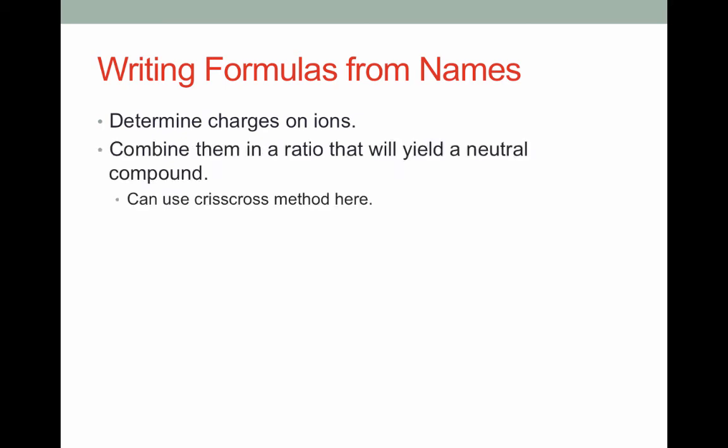Finally, it's important that you can also write formulas when given the names of compounds. This is essentially the reverse process of what we were just doing. In order to do this, first you need to determine the charges on the ions. And then you combine them in a ratio that will yield a neutral compound. You can use the criss-cross method here that we discussed in class.